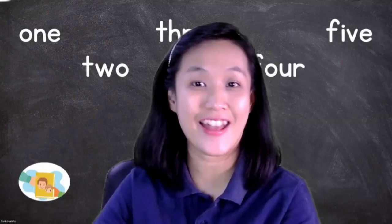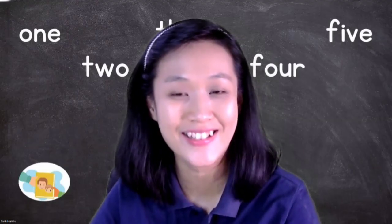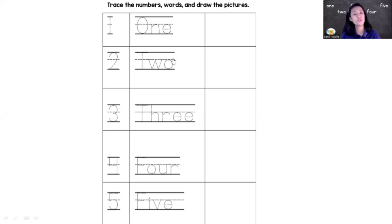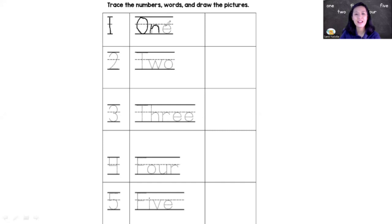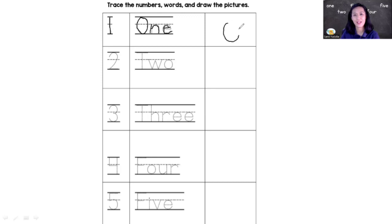Now take your pencil and your paper — let's do the worksheet. I want you to trace the number symbol, the word, and draw the pictures. Everybody ready? Let's start from number one. Make a line down and stop. Let's trace the number word: O-N-E. O-N-E. One. Now you can draw one circle.